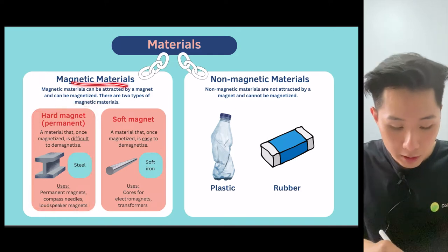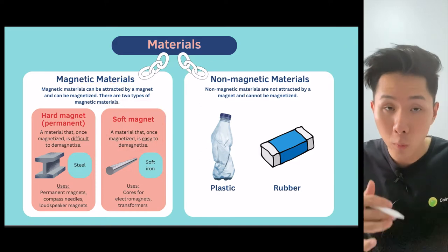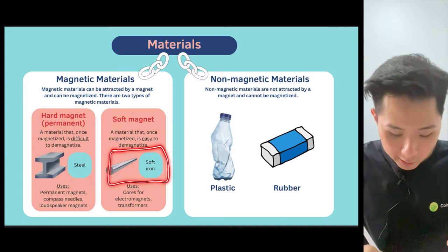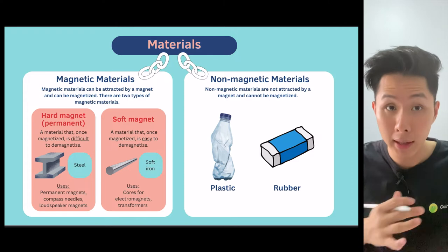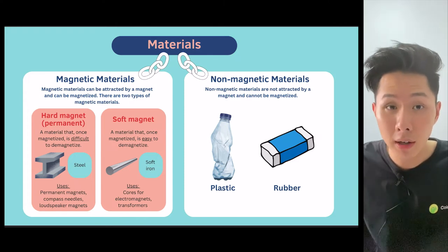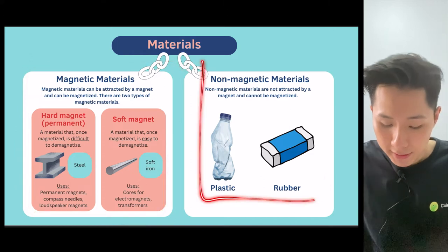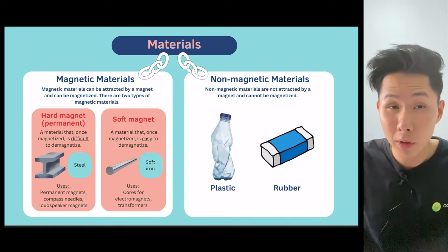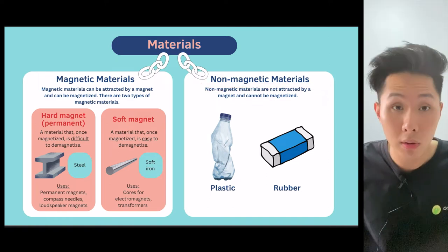The other type of magnetic material is called a soft magnet. It's a material that, once magnetized, is also very easy to demagnetize, such as soft iron. They are used widely as a core for electromagnets, which are the type of magnets that can be turned on and off. Whereas other materials like plastic and rubber, which cannot be attracted even if you put a magnet nearby, are called non-magnetic materials.